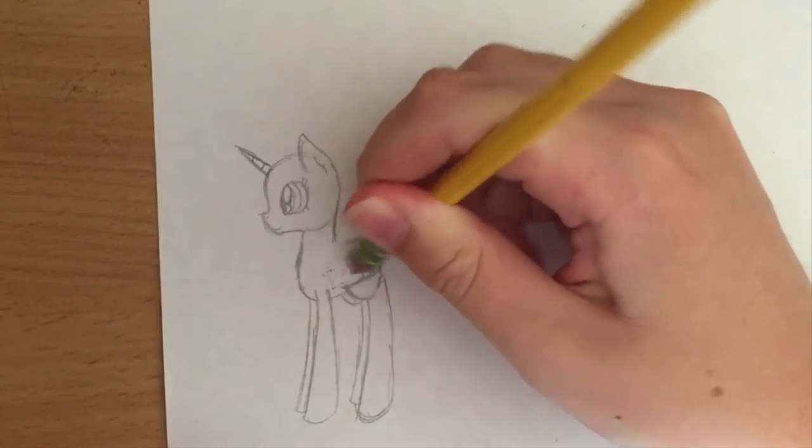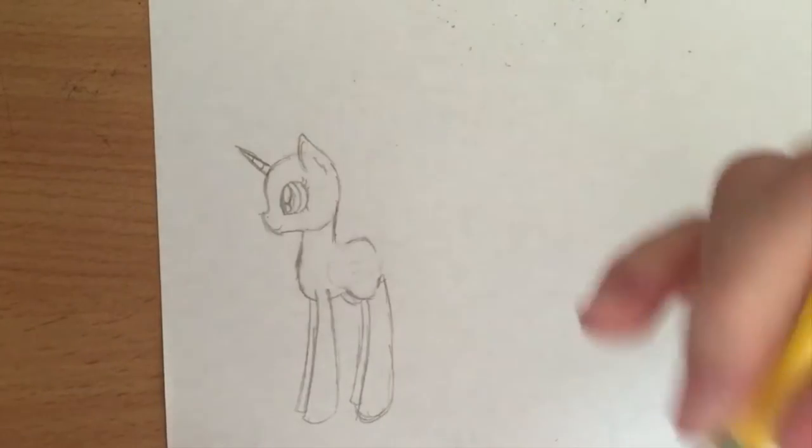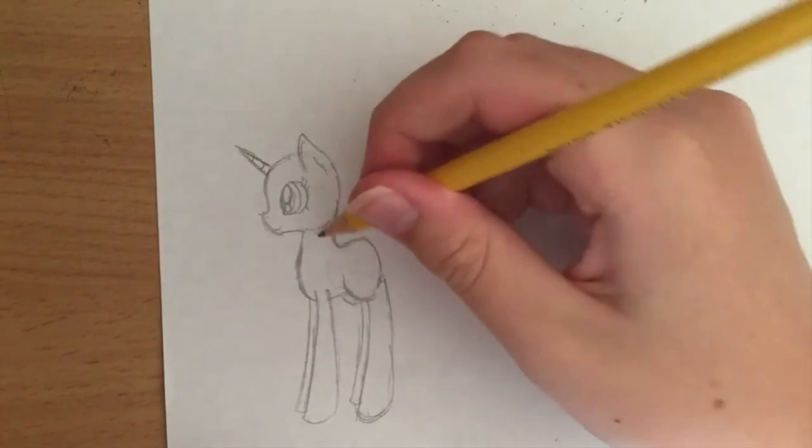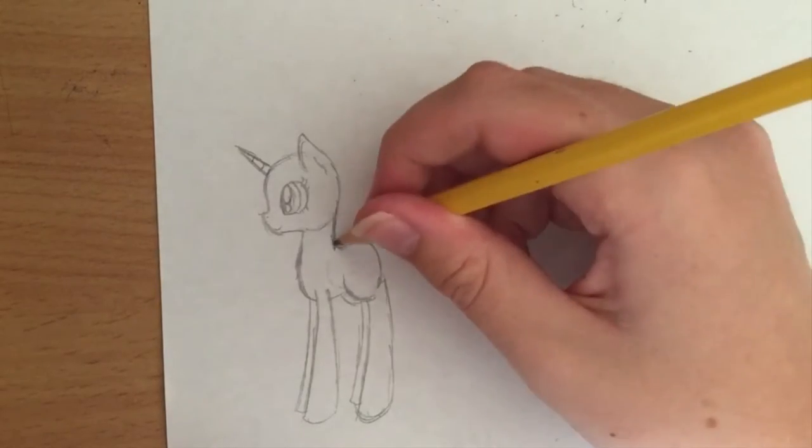So now I'm going to show you how to do open wings, so you can erase this. You want to start kind of inside the back, because wings don't start right here.